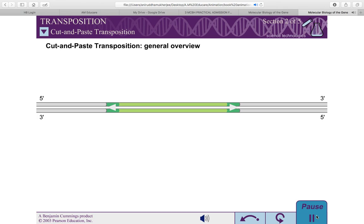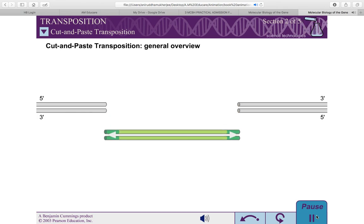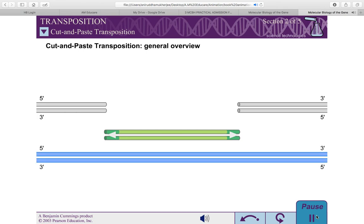Simply put, cut-and-paste transposition involves the excision of a transposon from its initial location in the genome, followed by integration of this excised transposon into a new DNA site. This is a non-replicative mechanism, meaning that the transposon is not copied during the transfer.